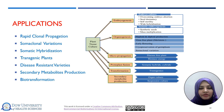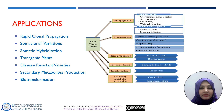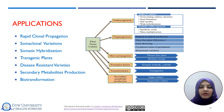Another very important application is somaclonal variation. Some variations can be done for making new varieties — for example, different colors can be produced in some horticultural plants. Different varieties can be produced — different fruits and vegetables with different colors and specific characteristics can be produced by somaclonal variation, where variations are made at the genetic level, and new varieties can be formed.